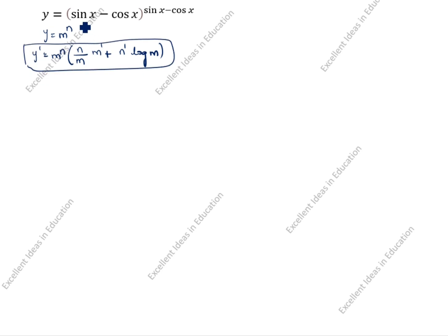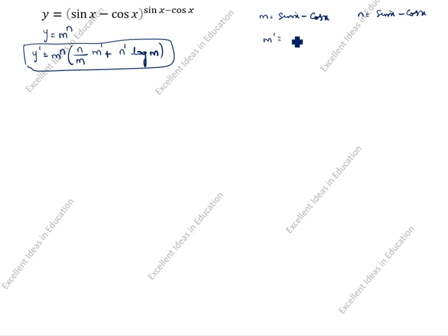So how we will split this one: sin x minus cos x to the power sin x minus cos x. m is sin x minus cos x, n is sin x minus cos x. What is m dash? m dash is cos x plus sin x. The same way, n dash is cos x plus sin x.